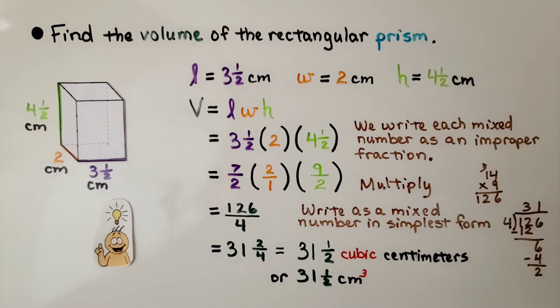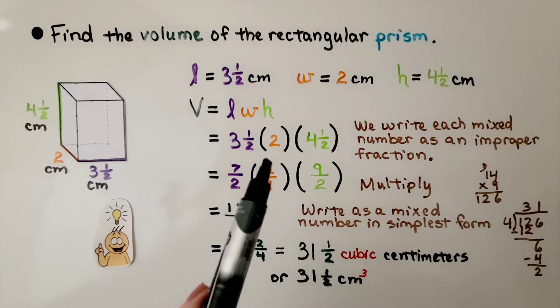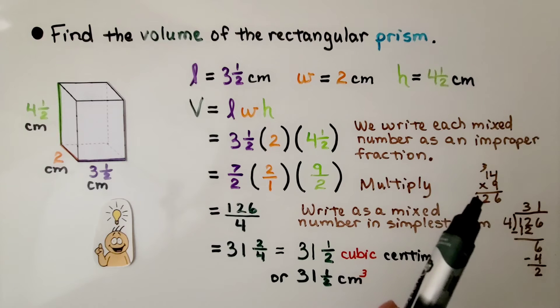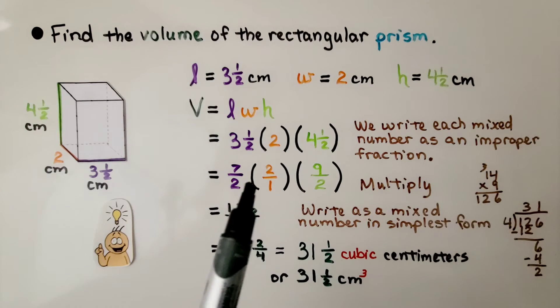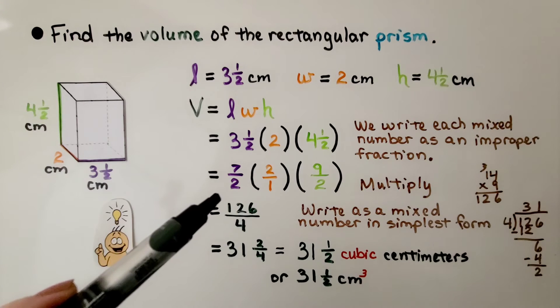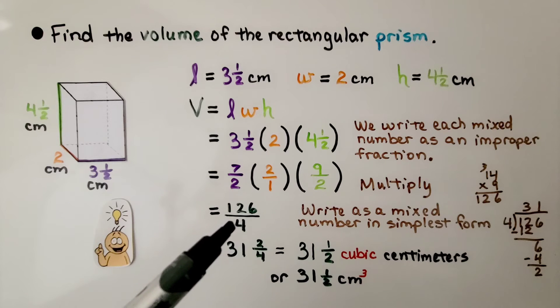Now we can multiply them. We know that seven times two is fourteen, but now we need fourteen times nine. We do a little math on the side. We see it's one hundred twenty-six, and two times one is two, and two times two is four. We have one hundred twenty-six for our numerator, and four is our denominator.